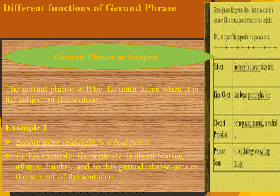Different functions of gerund phrase. Gerund phrase as a subject — the gerund phrase will be the main focus, occurring at the beginning of the sentence. 'Eating after midnight is a bad habit.' It could have been just 'eating' as a single gerund, but since we have 'eating after midnight,' that makes it a phrase. So 'eating after midnight' is a gerund phrase occurring in the beginning of the sentence, and therefore it is the subject.